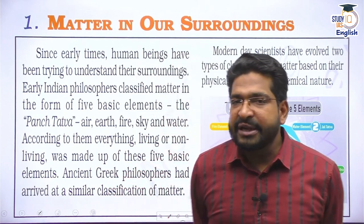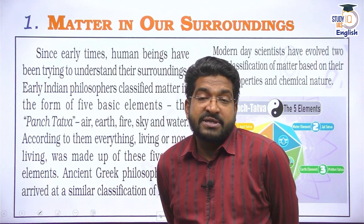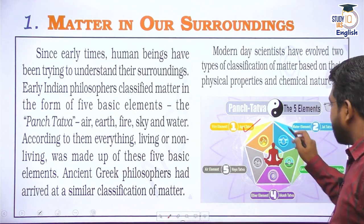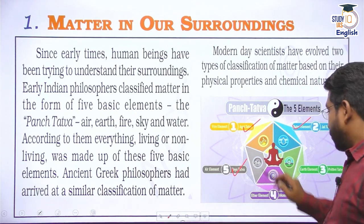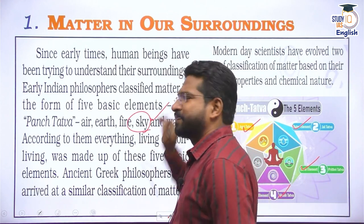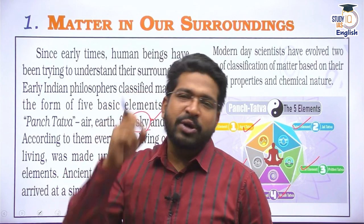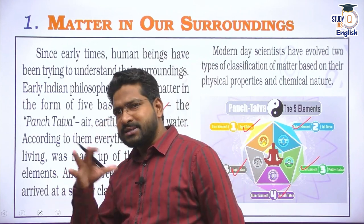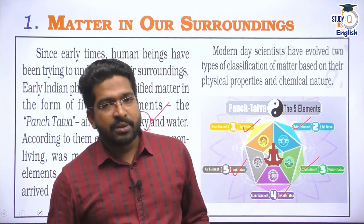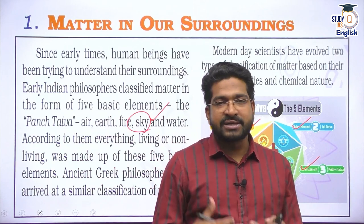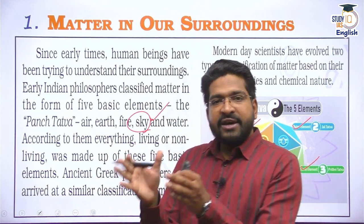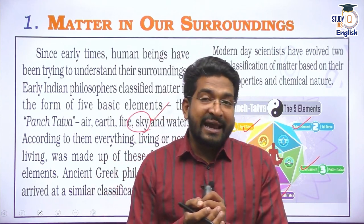The Panchatattvas are Agni, Jal, Vayu, Prithvi, and Akash — that means fire, water, air, earth, and sky or space. These were the five elements Indian philosophers spoke about. Greek philosophers also had a similar analogy. But as modern science progressed, scientists started doing experiments based on empirical data and studied the physical and chemical properties of matter.